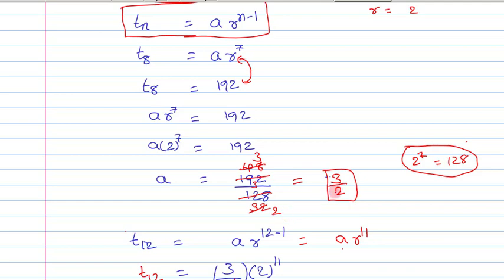Now we apply the formula of Tn to find T12. T12 equals a times r to the power of 12 minus 1, which is equal to a times r to the power of 11.